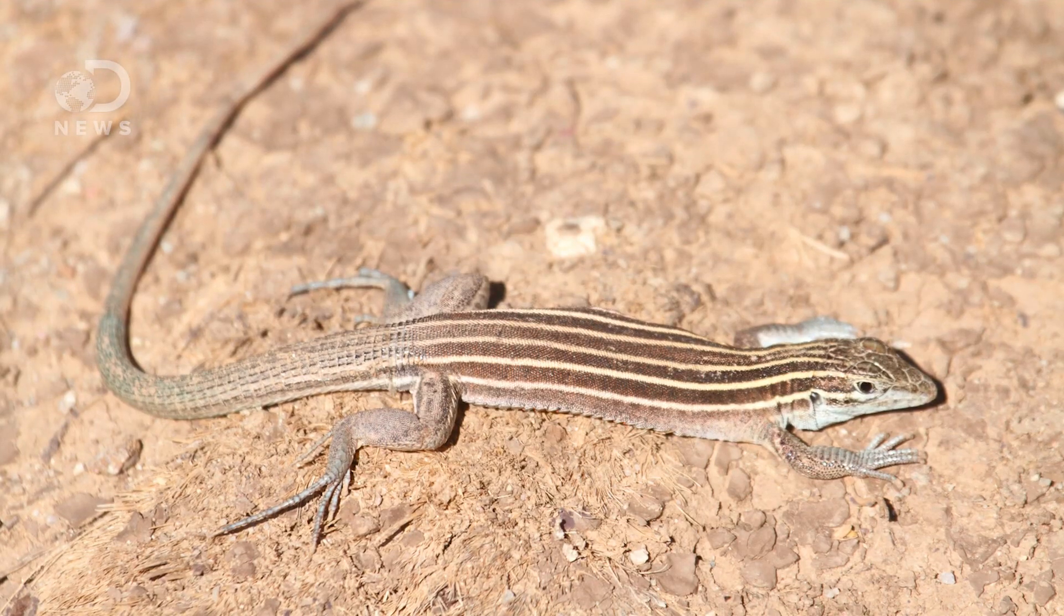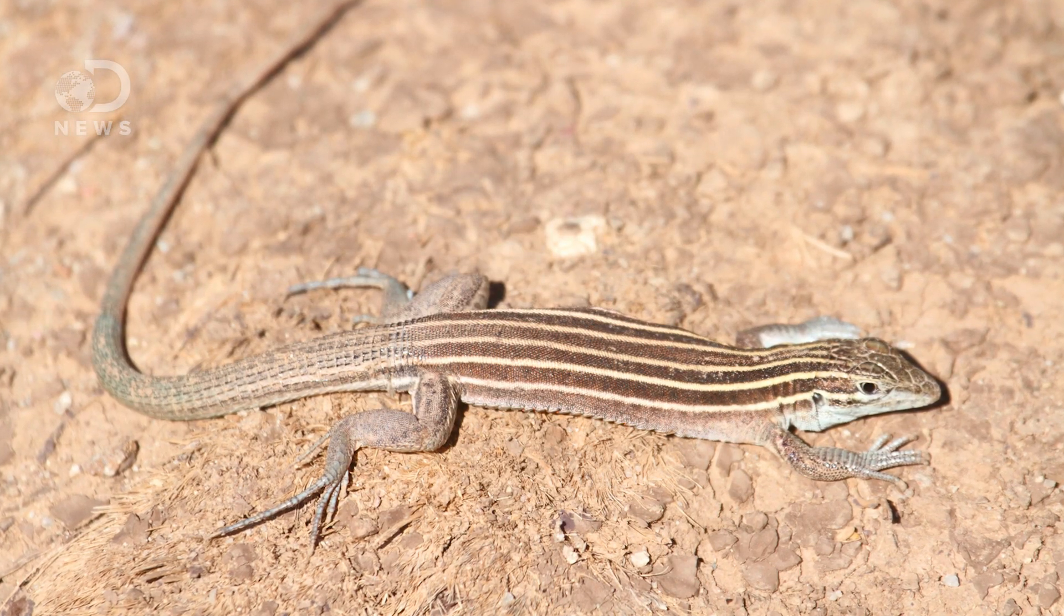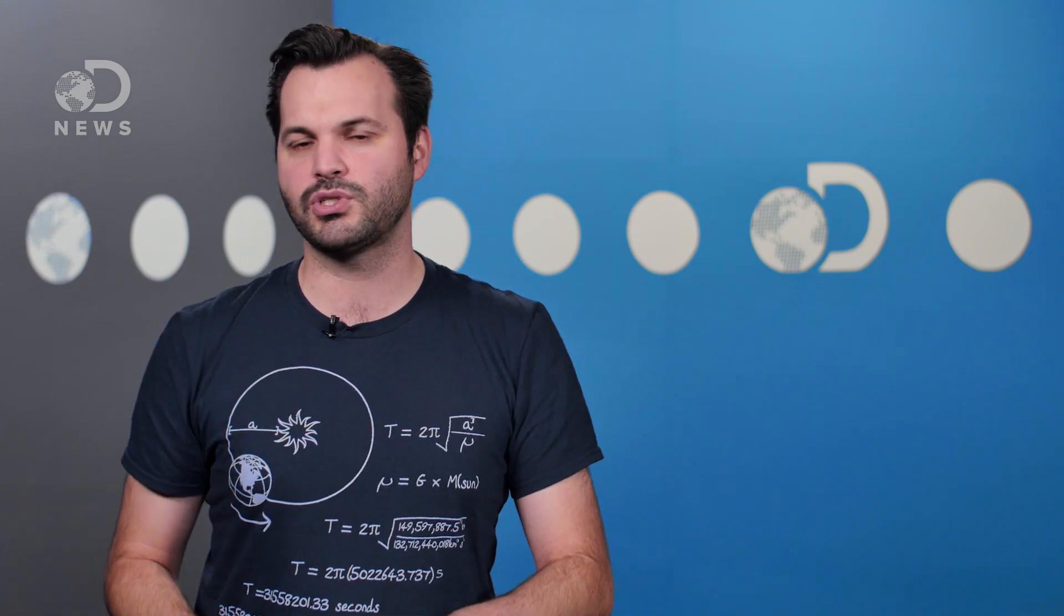They specifically looked at the whiptail lizard, which starts with a ton of genetic diversity to begin with. Whiptail lizard eggs contain twice the number of chromosomes of sexual lizards of similar species. So, when they start parthenogenesis, their genes don't overlap, because they have so much more to work with. How did this evolve? They're still working that out.